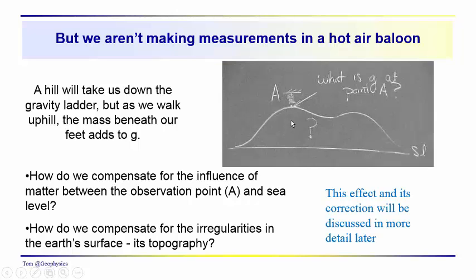Another problem that we have is that, well, we really aren't taking measurements of the acceleration due to gravity up in a hot air balloon somewhere. We have something underneath our feet that we're walking on. And assuming that there isn't a major geological problem here, we're, this is a feature that we're going to have to eliminate or compensate for. And that would be the matter between the observation point and some reference datum, most often sea level. It doesn't have to be sea level. The question would be how do you compensate for the topography beneath your observation point.